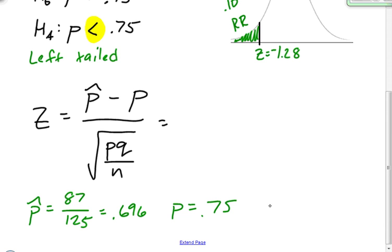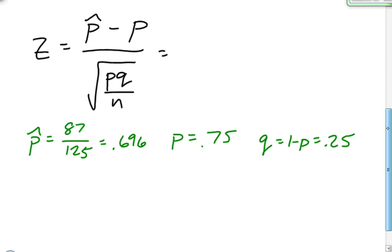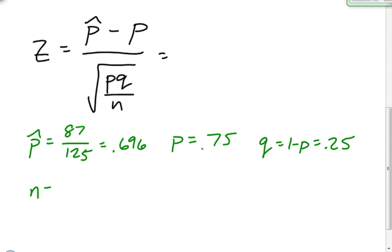The two other things I need are q and n. P and q have to add up to 1, so q is always equal to 1 minus p. In this case, q is 0.25. And I need my sample size, which is n, and n is equal to 125 — 125 people were surveyed. Now I can go ahead and plug all these numbers into my formula to find my test statistic.